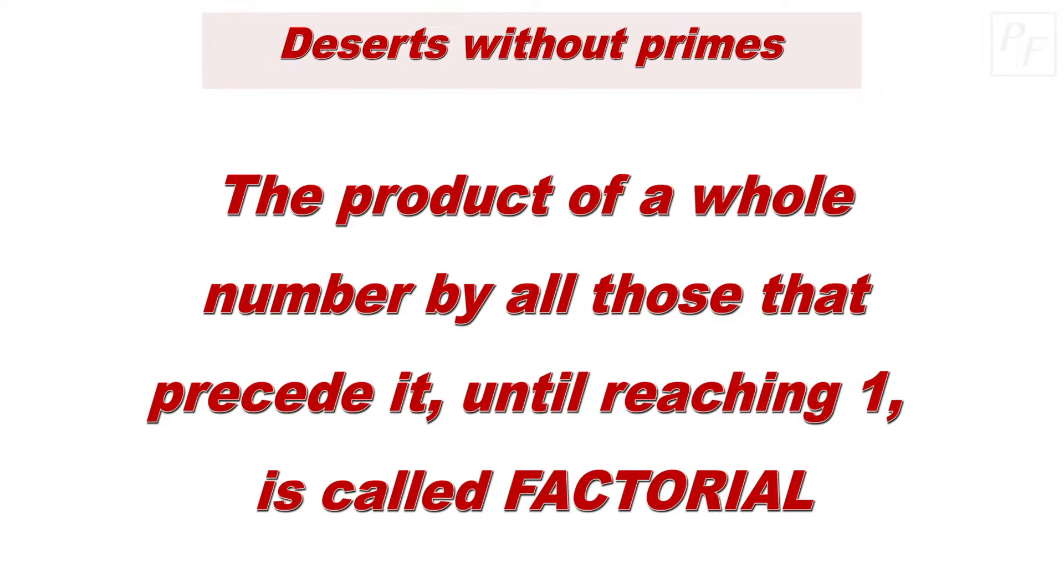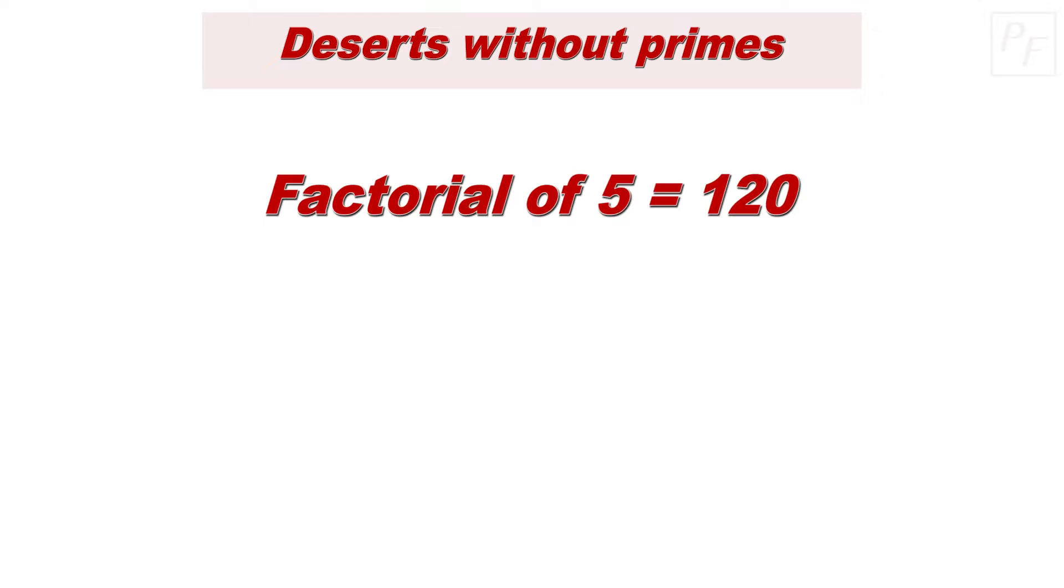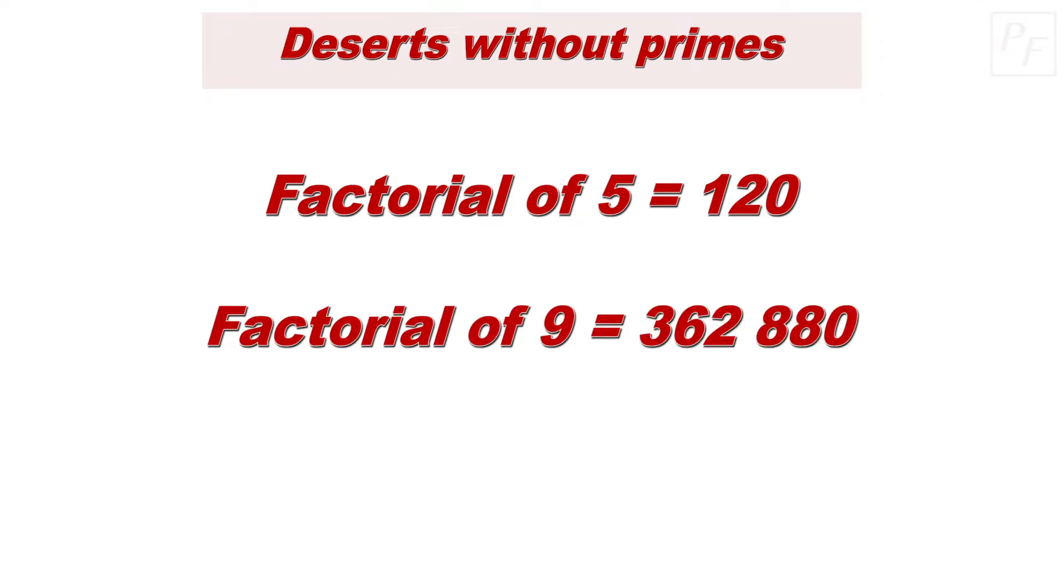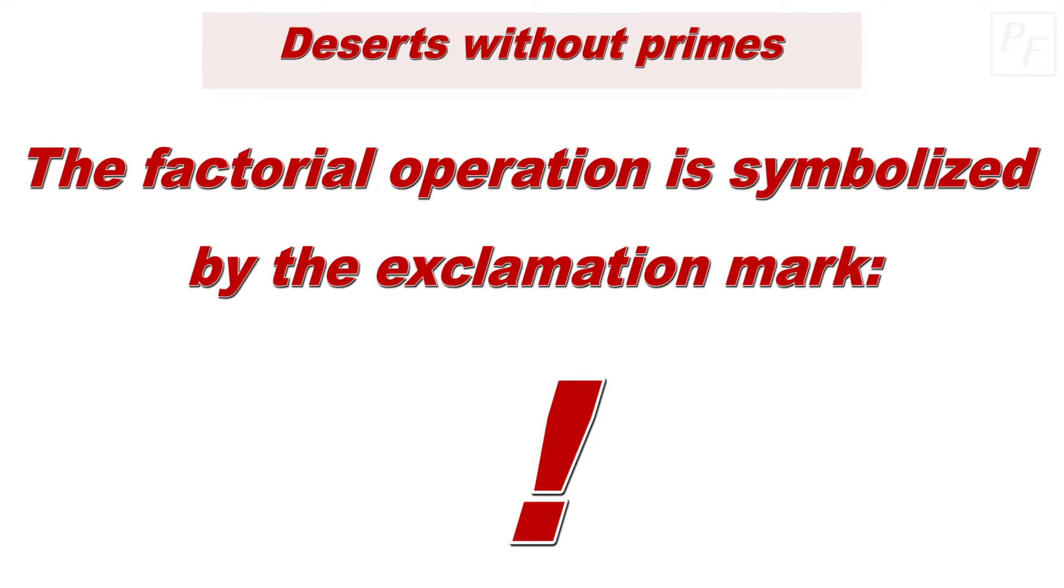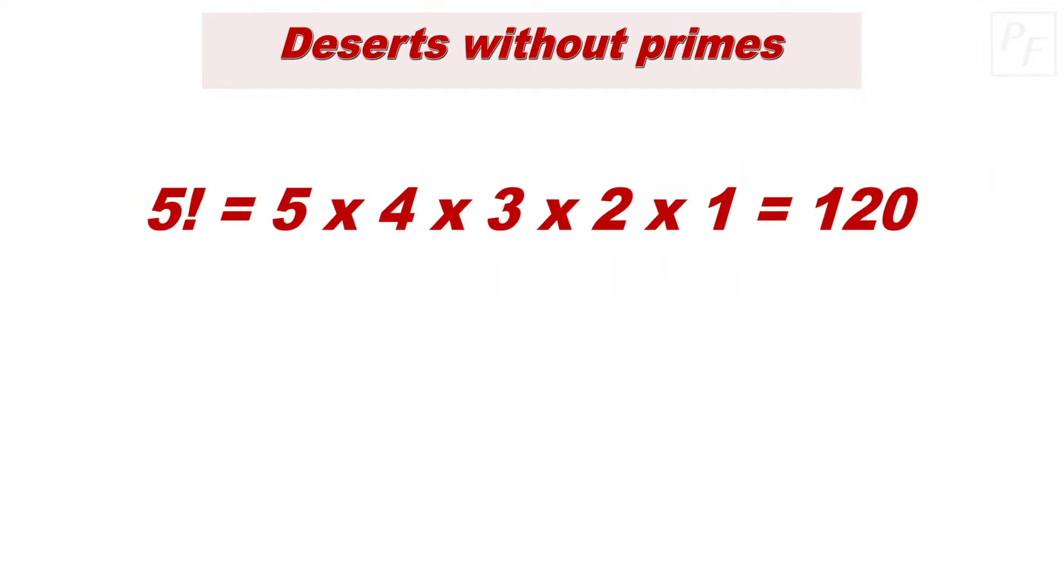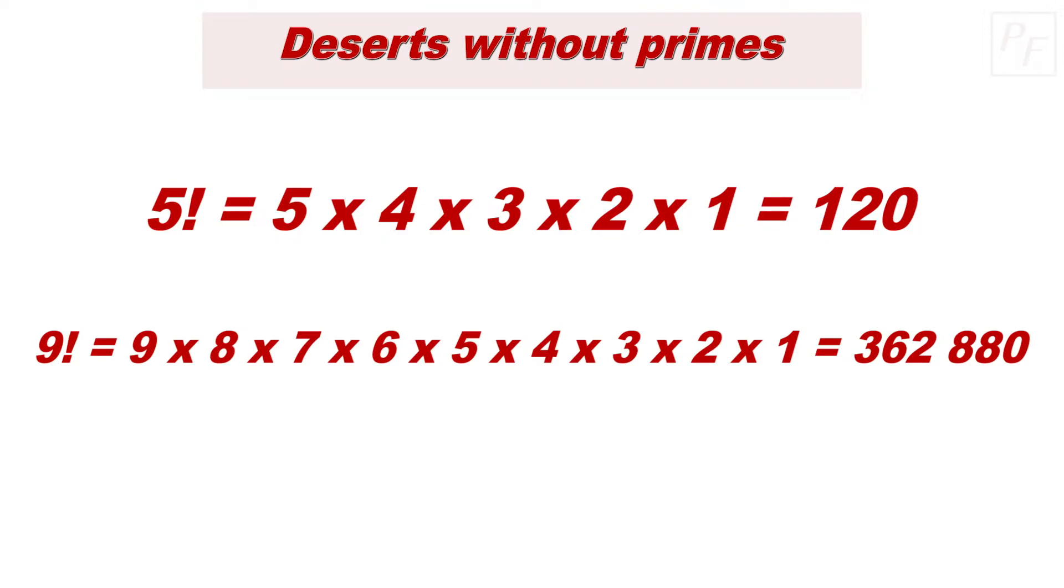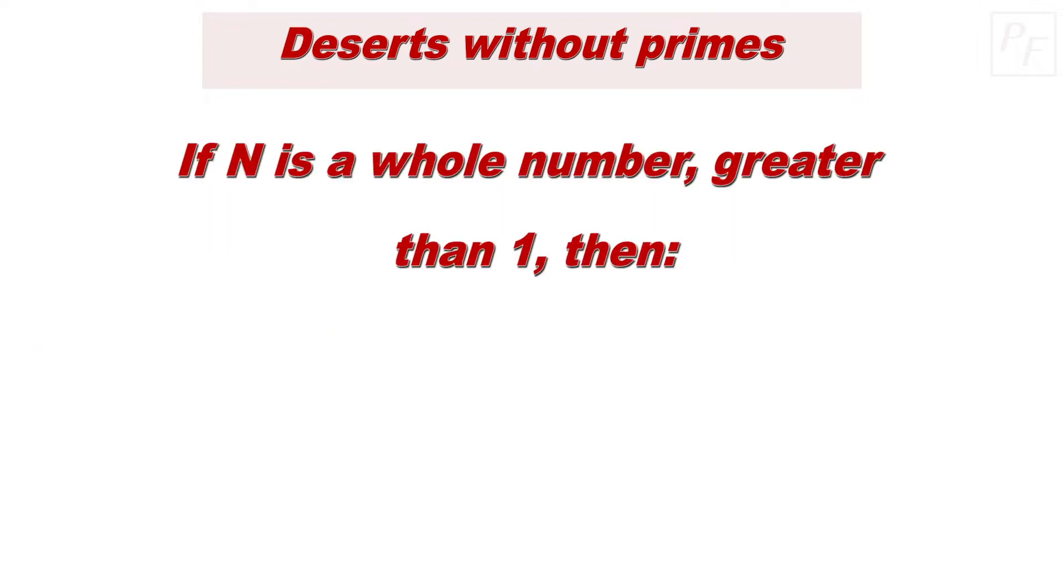In mathematics, the product of a whole number by all those that precede it until reaching 1 is called factorial. In our case, factorial of 5 is equal to 120, and, for example, factorial of 9 is equal to 362,880. The factorial operation, and although it seems strange, is symbolized by the exclamation mark. That is, 5 factorial is equal to 5 times 4 times 3 times 2 times 1 equal to 120, or 9 factorial is equal to 9 times 8 times 7 times 6 times 5 times 4 times 3 times 2 times 1 equal to 362,880. Written in a more mathematical way, if n is a whole number greater than 1, then n factorial is equal to the next expression.